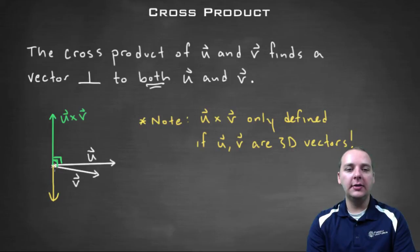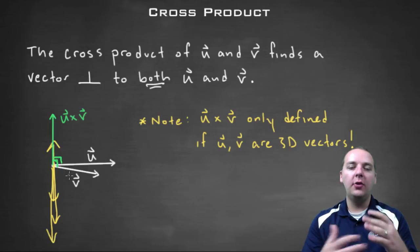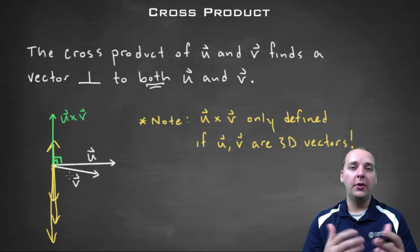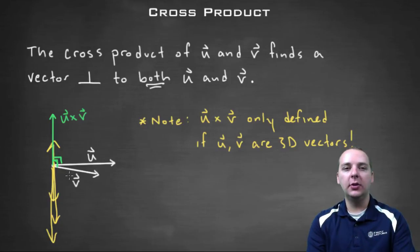Or how do you know it's not this long or this long or this long? How do you know the length of the cross product, because technically all of those are orthogonal to both u and v? So we'll answer those types of questions in a later video.